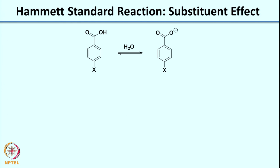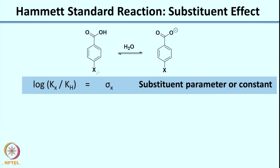This concept was used by Hammett to come up with his standard reaction to study the substituent effect. For this generic reaction where you have a substituent at the para position, the log of Kx divided by Kh is given by sigma-x. Sigma is called the substituent parameter or substituent constant. Log of Kx (equilibrium constant for substituted benzoic acid) divided by Kh (equilibrium constant for unsubstituted benzoic acid) gives sigma.